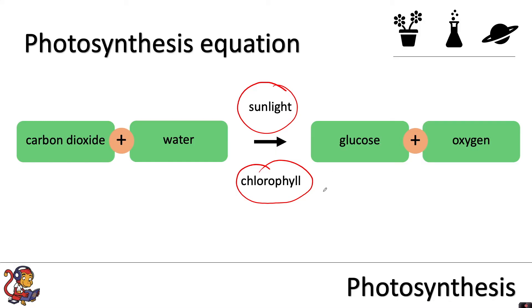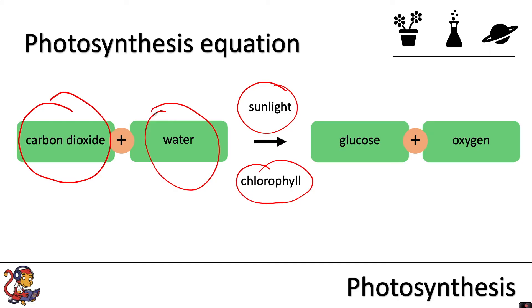When we look at the structure of the leaf again, we need to think: how do we get carbon dioxide into the leaf and water? How are we allowing sunlight through? Where is the chlorophyll that we need to produce glucose and oxygen? We'll be thinking about these four things as we look at the function of each part of the leaf.